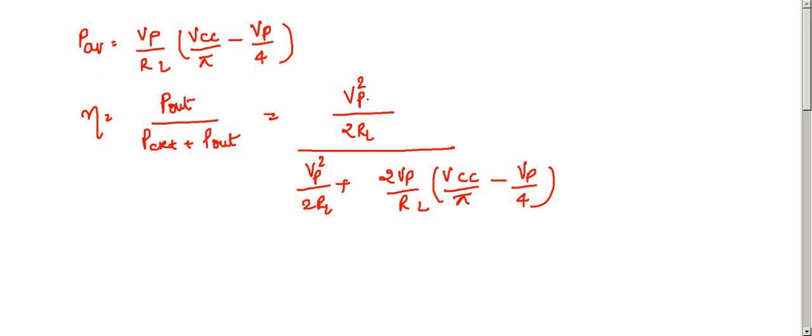This pout, it was a sinusoidal waveform, we assume vp sin omega t, and the load resistance was RL, hence pout was equal to v square p upon 2RL. On solving this,